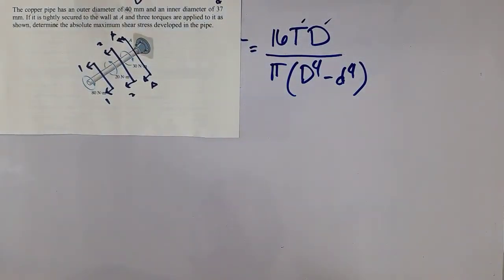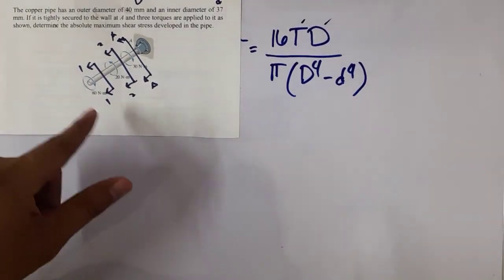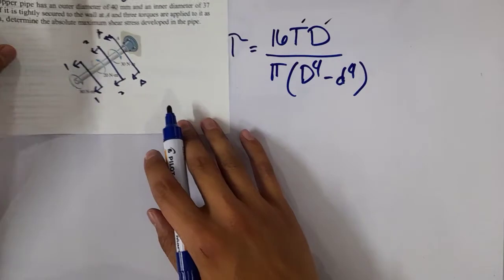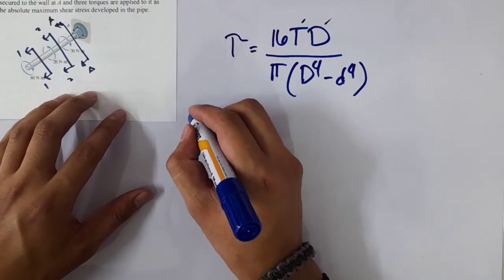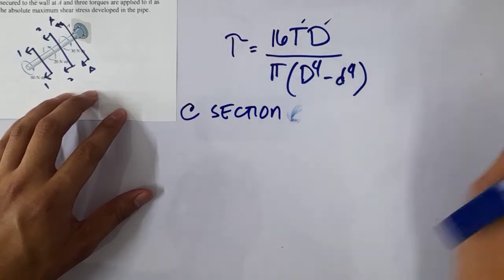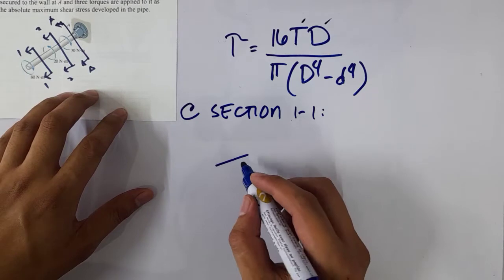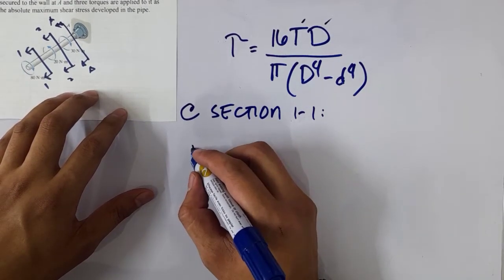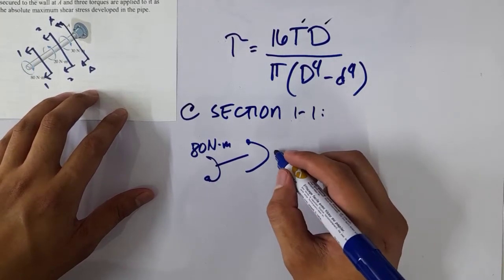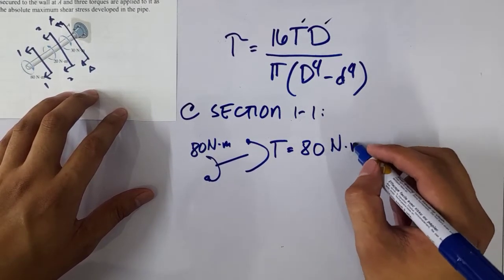This way we'll find the largest internal torque or moment caused by the applied external torques. Considering section 1-1, we have 80 newton meters, so we have a resisting moment here which is also equal to 80 N·m.